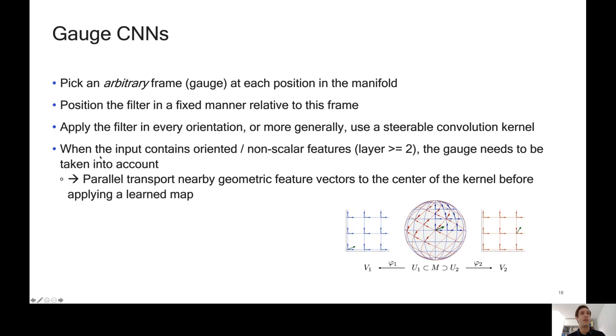And then there's a tricky part. We're not going to do max pooling. And so we end up with geometric features, features that have some orientation information. And so when the input contains these oriented or non-scalar features, which we'll have in layers two and higher, we need to take into account the gauge when interpreting those coefficients. So basically what we do is we parallel transport the nearby geometric feature vectors to the center of the kernel before applying a learned map. Because if you have these two nearby feature vectors, but they have a very different frame, then you cannot just interpret those numbers in the same way and apply the same linear map to them.